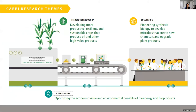Within CABI — one of four bioenergy research centers funded by the Department of Energy — the overall goal is to develop the science, technology, and knowledge base necessary to enable sustainable, cost-effective production of advanced biofuels and bioproducts from non-food plant biomass. Within CABI, we're organized in three integrated research themes: feedstock production, developing more productive and resilient crops; the conversion theme, pioneering synthetic biology to develop microbes that create new chemicals; and the sustainability theme, which I'm part of, optimizing the economic value and environmental benefits of bioenergy and bioproducts.